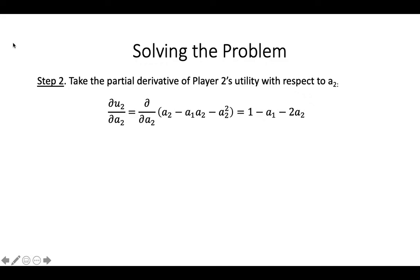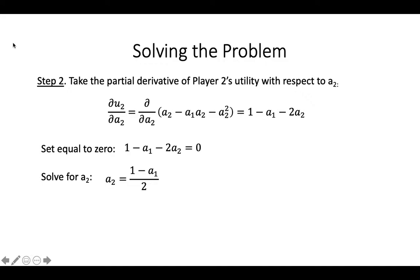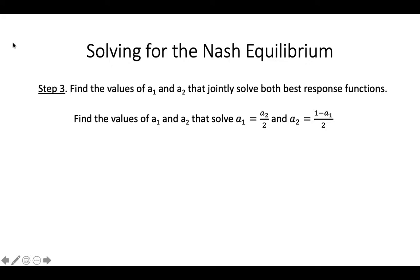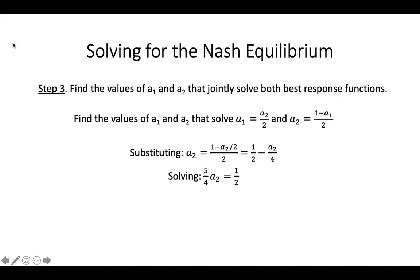Then, we do the same thing for Player 2. Take the partial derivative of Player 2's utility with respect to A2, set equal to 0, and solve. The equation we get describes Player 2's best reply to whatever Player 1 chooses — their best response function. To find the Nash equilibrium, we solve for the values of A1 and A2 that make both best response functions true simultaneously, meaning we need to solve a system of two equations and two unknowns. Substituting the equation for A1 into the equation for A2, we get that A2 equals 1 half minus A2 over 4. Solving for A2, we get that A2 equals 2 fifths and A1 equals 1 fifth.